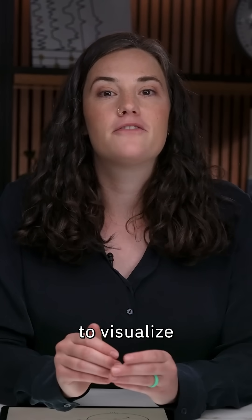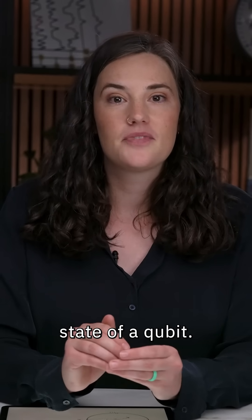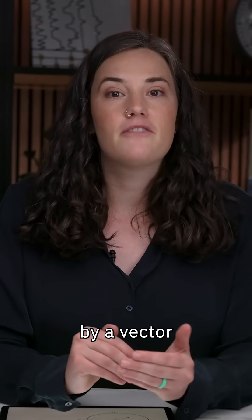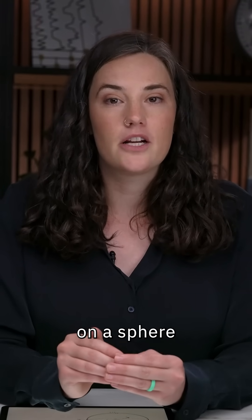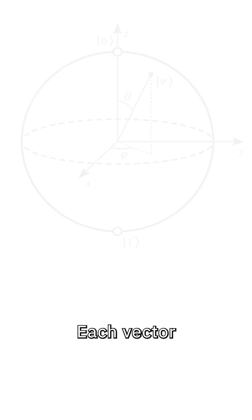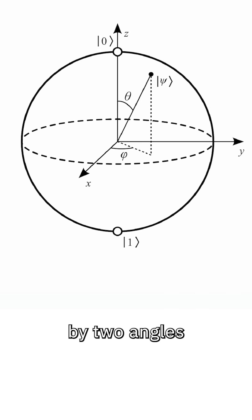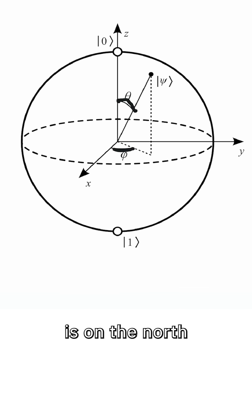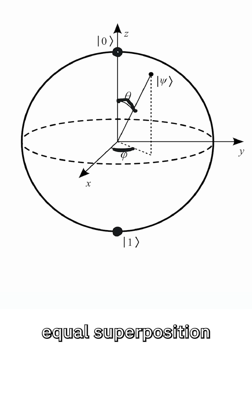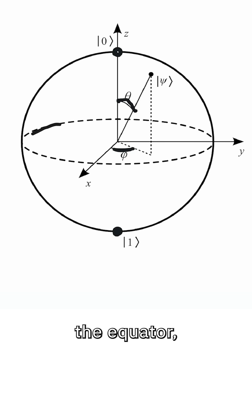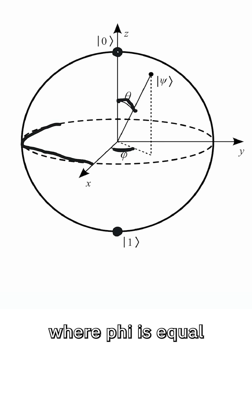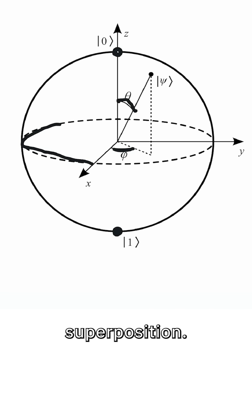A brief aside about a helpful way to visualize the quantum state of a qubit. It can be represented by a vector pointing to some place on a sphere called the Bloch sphere. Each vector is parameterized by two angles, theta and phi. The state zero is on the north pole, the state one is on the south pole, and an equal superposition of zero and one is somewhere along the equator, where phi is equal to the relative phase between the two parts of the superposition.